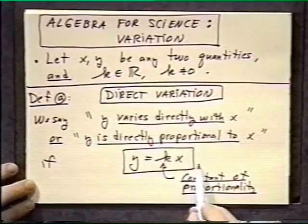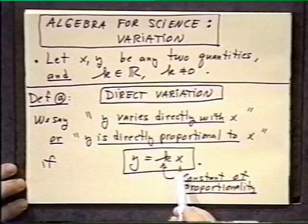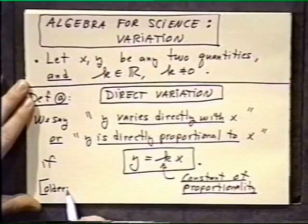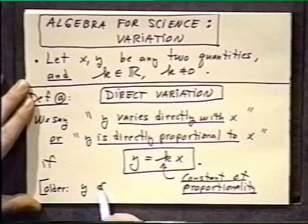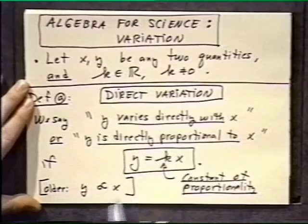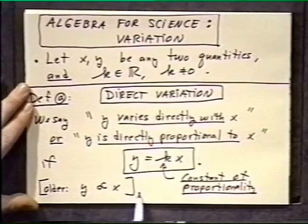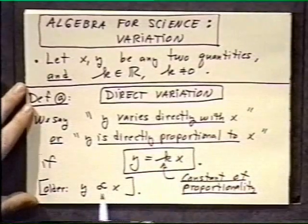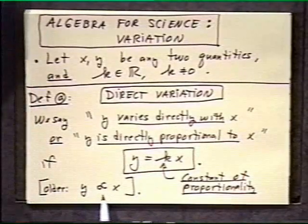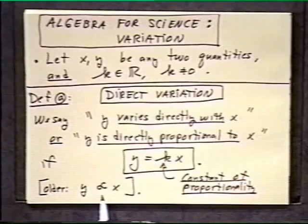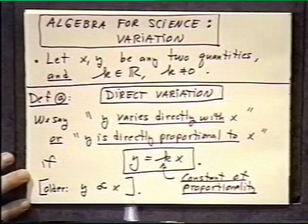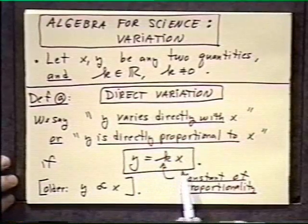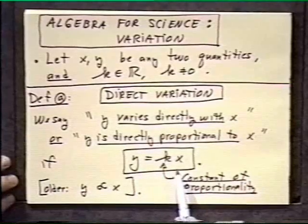There is an older symbol for this — the proportionality symbol — where y is written as proportional to x. That's no longer commonly used since we've adopted the equal sign, which is far more easy to work with. But you'll often see folks in the sciences write this first, then immediately go to the equation form. That's what direct variation is: one variable is simply a multiple of the other.